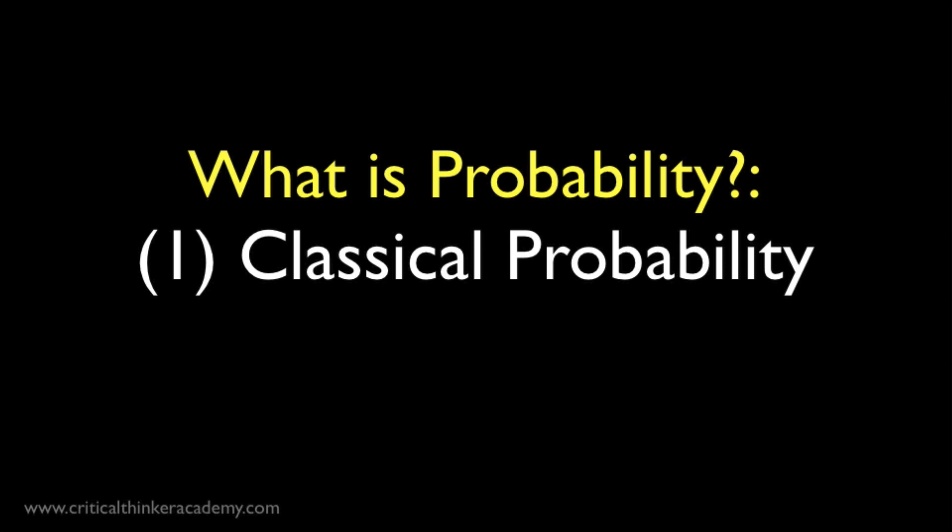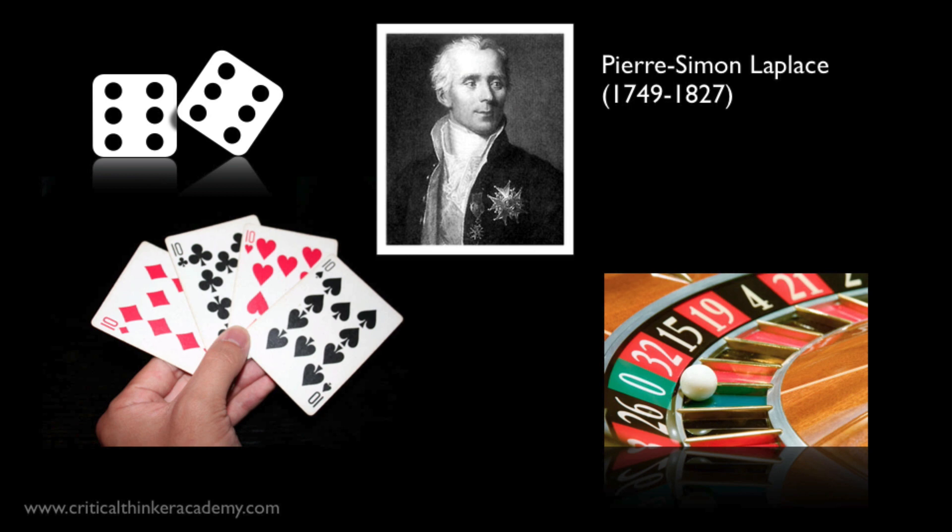The first interpretation we're going to look at is also one of the earliest and most important, and it's come to be called the classical interpretation of probability. The classical interpretation comes from the work of mathematicians in the 17th and 18th century, people like Laplace, Pascal, Fermat, Huygens, and Leibniz.